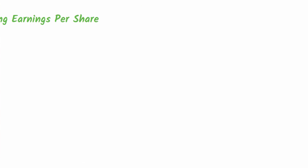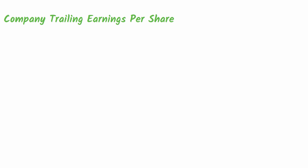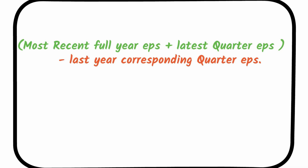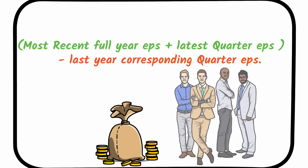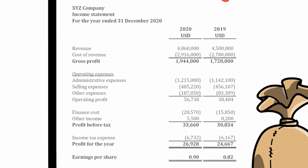Before we get into the actual calculations, there are a few things you'll need. First, we need the company's trailing earnings per share, which is basically a full year's EPS plus the latest quarter EPS minus last year's corresponding quarter EPS. For those who don't know, earnings per share is simply a portion of the company's profit allocated to ordinary shareholders.